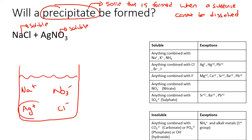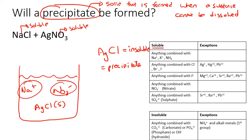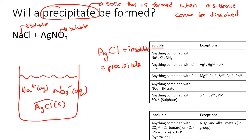But what about Ag⁺ and Cl⁻? Positives always combine with negatives. If you put AgCl together — anything combined with Cl is soluble except for certain exceptions, and Ag is one of those. So AgCl is actually insoluble, meaning it's going to form a precipitate. These two will combine, stick together, and form a solid, while Na⁺ and NO3⁻ just float around as aqueous ions in the water.